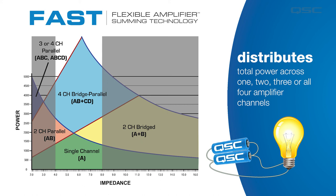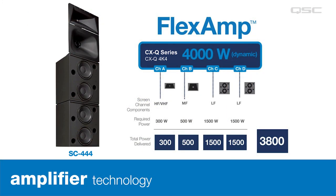Along with FAST, these network amps feature another QSC signature innovation: Flexamp. Flexamp allows each channel to deliver only the amount of power required by the loudspeaker load on that channel. For instance, to power a QSC SC444 screen channel loudspeaker using an amplifier rated at 4,000 total watts, your low-frequency cabinets could take 1,500 watts each, the mid-range driver could take 500 watts, and your high and very high-frequency drivers still have more than enough power — and it happens automatically with no setup required from the user. Flexamp and FAST make the CX Q series incredibly versatile and eliminate the need for multiple single-purpose amplifiers.